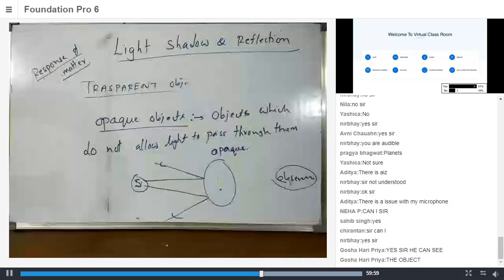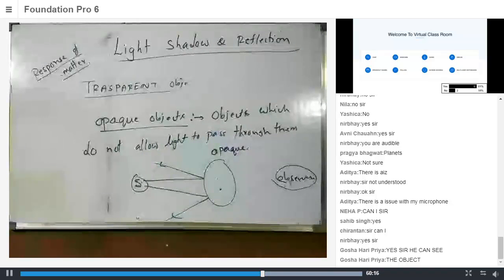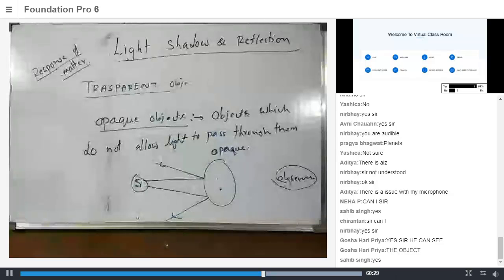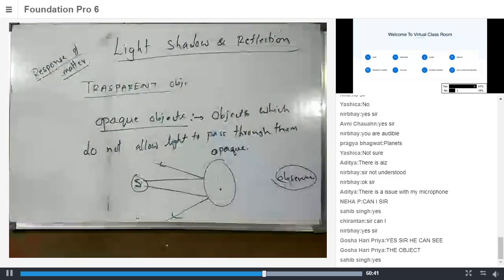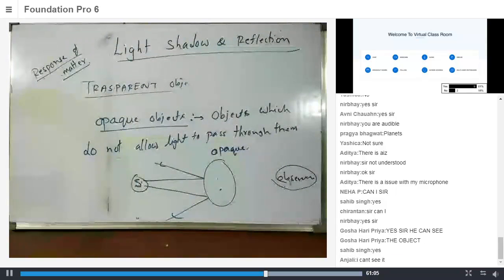Teacher repeats the question: 'We have a source, an opaque object — a very big object — and an observer. Will the opaque object be visible?' Students struggle to respond due to the poll not loading. Teacher asks Anjali and others to answer. One student says: 'The observer cannot see the source.'